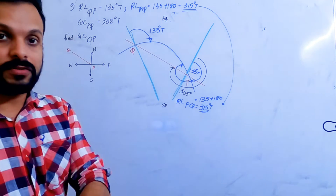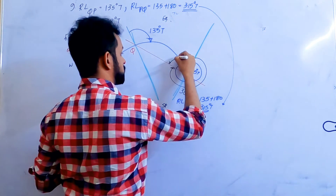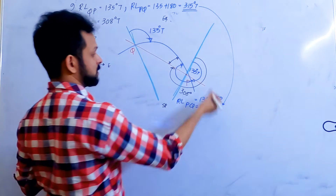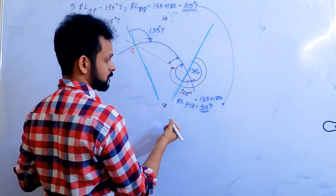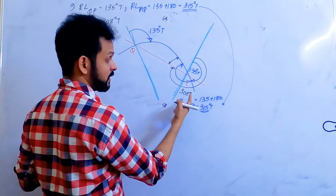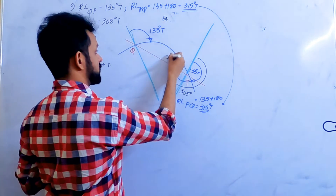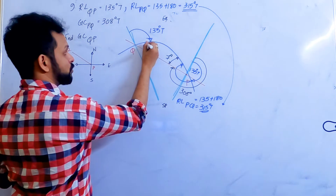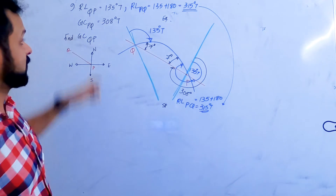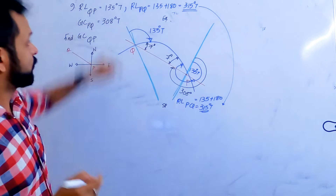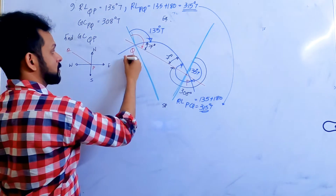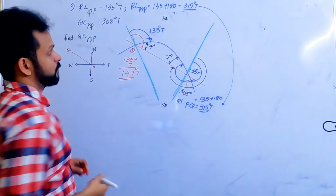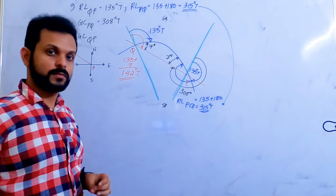So between the rhumb line track and the great circle track: 315 is the rhumb line track, 308 is the great circle track — that's 7 degrees, which is the conversion angle. The conversion angle between two points joined by the same two tracks will be the same. Therefore the great circle track from Q to P is 135 plus 7, which is 142 degrees true.